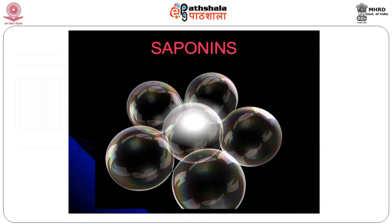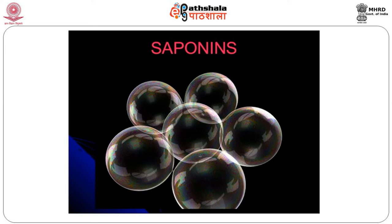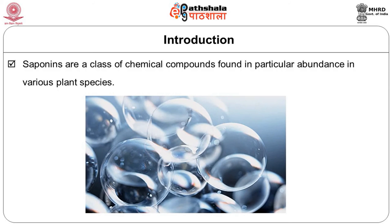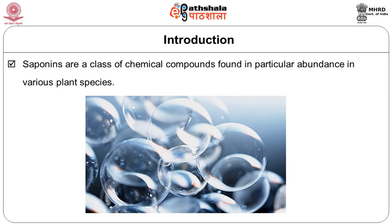The other molecule we will learn about is saponins. Saponins are a class of chemical compounds found particularly in abundance in various plant species. They are commonly termed as amphipathic glycosides, grouped phenomenologically by the soap-like foaming they produce when shaken in aqueous solutions.